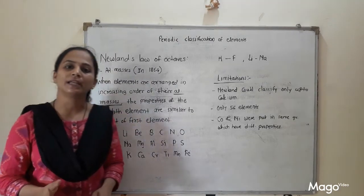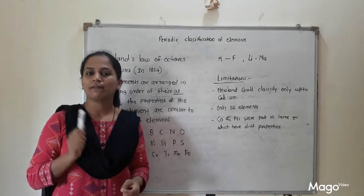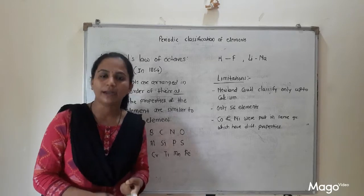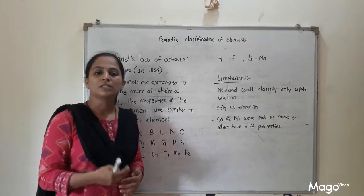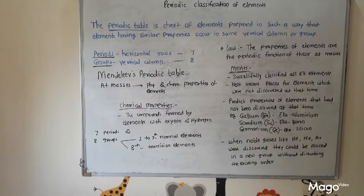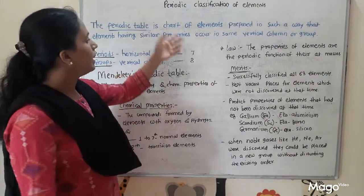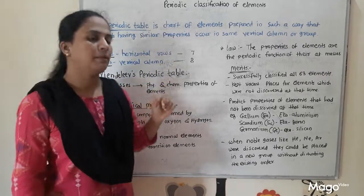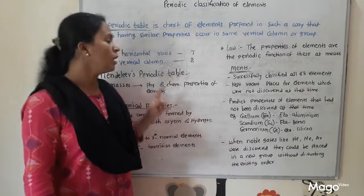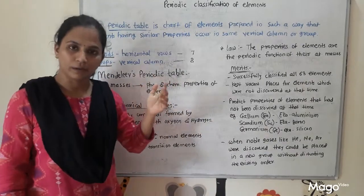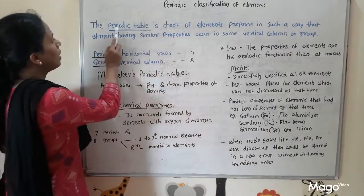After Newland, Mendeleev was the scientist who tried to classify the elements present at that time. We have studied Dobereiner's triads and Newland's law of octaves. Next we will study Mendeleev's periodic table. Before discussing it, students should know some key terms. The first term is 'periodic table': the periodic table is a chart of elements prepared in such a way that elements having similar properties occur in the same vertical columns or groups.